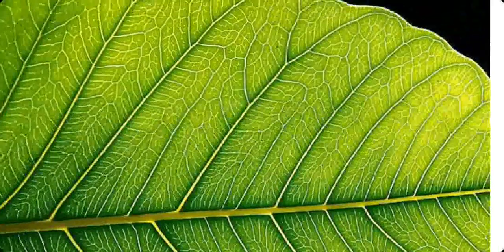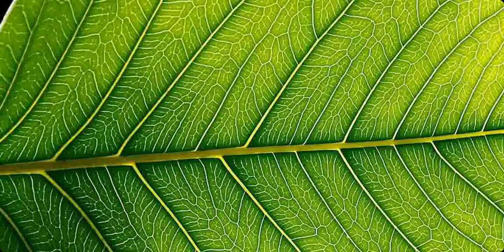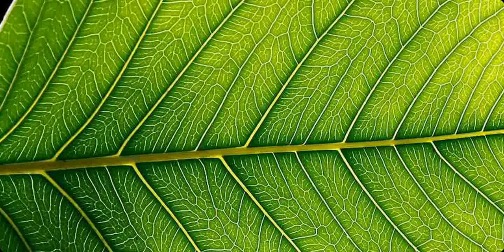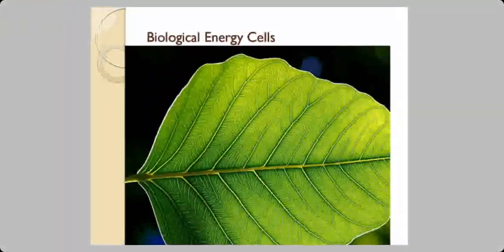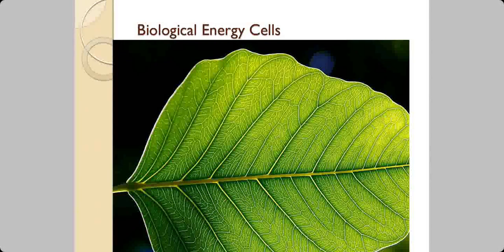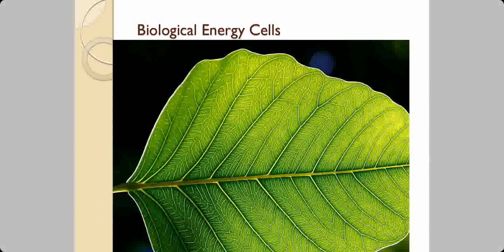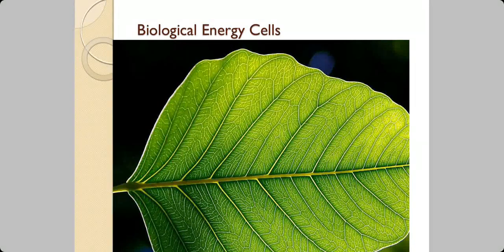This is a dicot leaf. Because of the chlorophyll it is green, and because of the chlorophyll, stomata, the soil the plant is fixed to, the atmosphere providing carbon dioxide, and the sunlight it harvests — the only source of energy for all living things — this leaf is a biological energy cell. It gathers the sun's energy, converts it into carbohydrates, and makes that available to herbivores first and then to carnivores. That is how living organisms on earth get their energy.